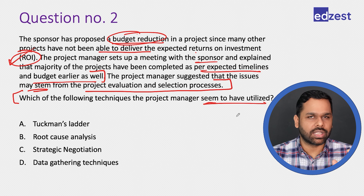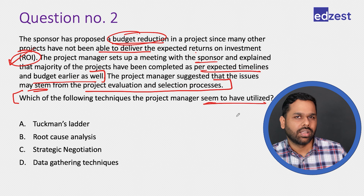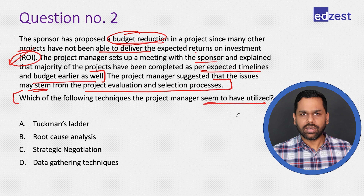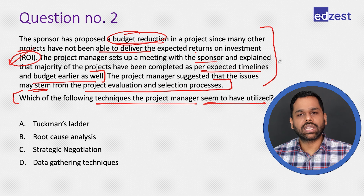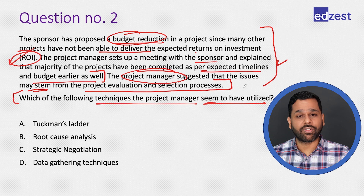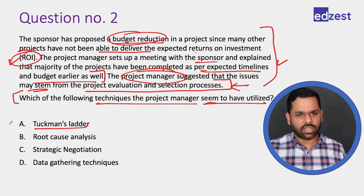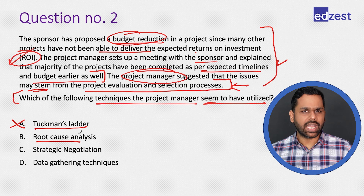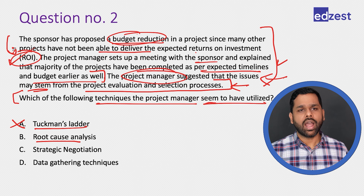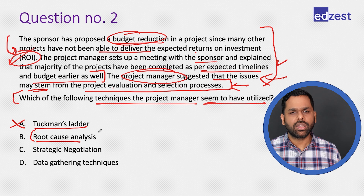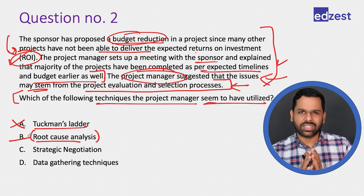The question asks: which technique did the project manager seem to have utilized? These types of questions — asking which technique or document was used — are rare in the PMP exam, maybe three to five questions. Option A: Tuckman's Ladder — that is for team development and is not discussed here, so we can eliminate it. Option B: Root cause analysis — probably yes, because we are trying to understand why the problem of not delivering value occurred.